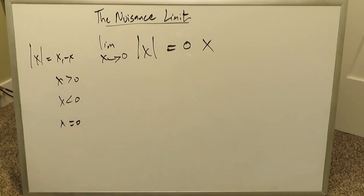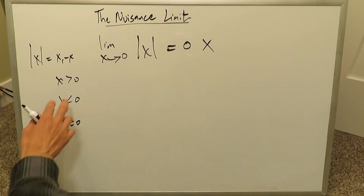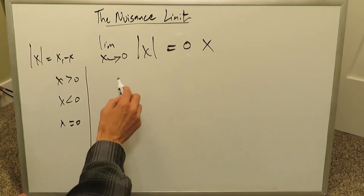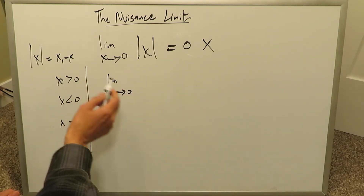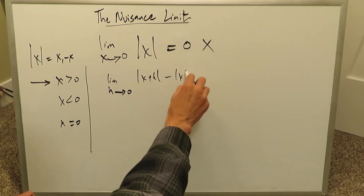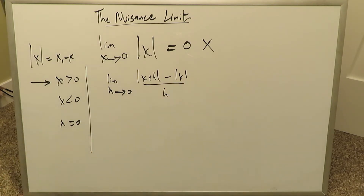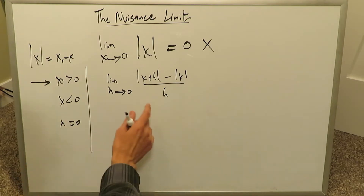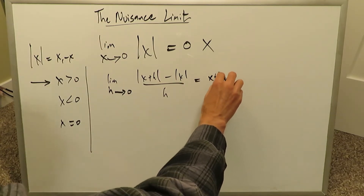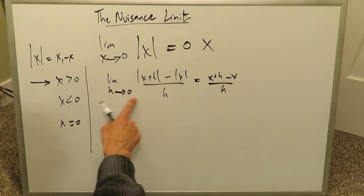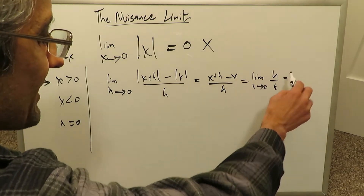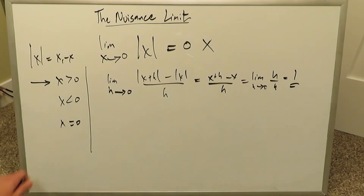For values larger than 0, everything will be handled using the basic definition of the derivative. When you place values larger than 0 into that basic definition, the limit as h approaches 0 gives us: absolute value of (x plus h) minus absolute value of x, all over h. Opening up these absolute values for positive x, you get x plus h minus x over h. The x's cancel out, leaving h over h, and the h's cancel, giving a limit value of 1.